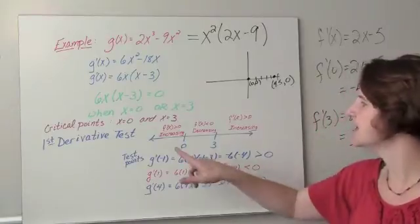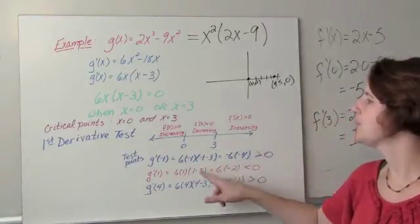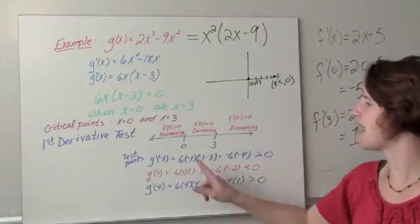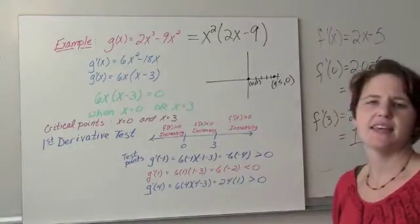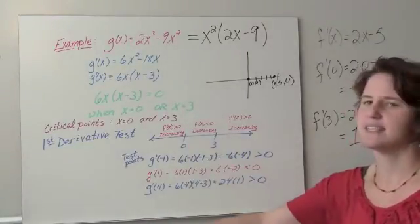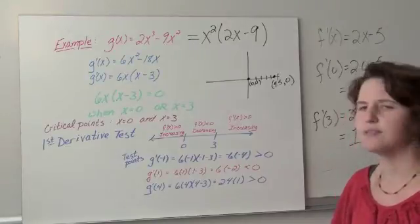First derivative test. Draw the number line. Put your critical points on the number line. I have 0 and 3. And then I picked my test points. A number less than 0, I picked negative 1.